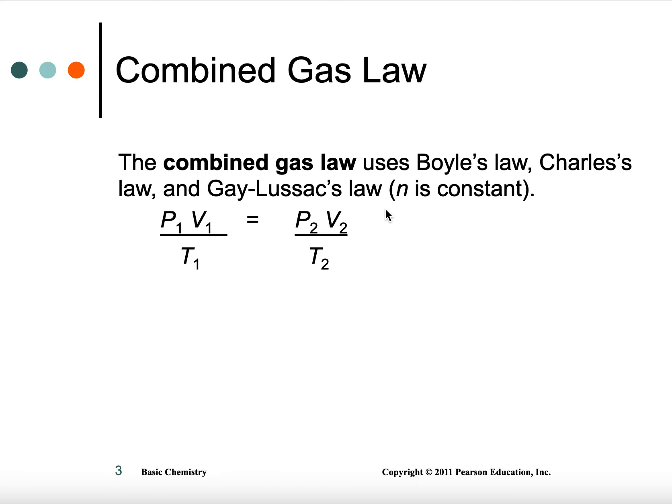And then Charles' Law was temperature and volume. So it was V1 over T1, V2 over T2. Do you see there? It's there also. And then Gay-Lussac's Law was temperature and pressure. So P1 over T1 equals P2 over T2. All three of those are together.